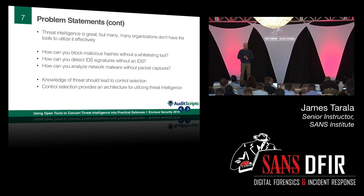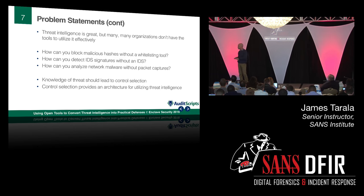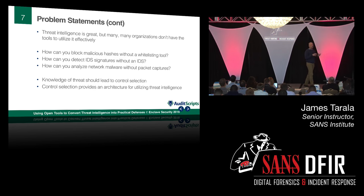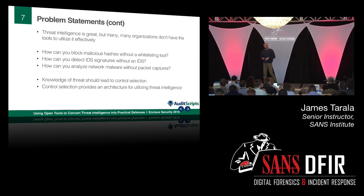How do we block malicious hashes if we don't have a whitelisting tool? If we have IDS signatures but no IDS, how do we respond? How do we analyze traffic from malicious code if we don't have packet captures? It sounds basic, but I feel like I'm telling everyone: you have to eat your vegetables before you do the more advanced, more fun things. Lots of organizations still don't have whitelisting, still don't have IDSs, and rarely do packet captures outside their border.